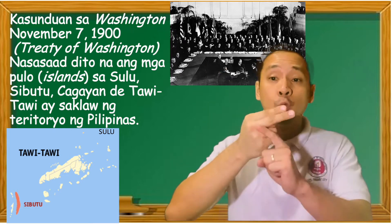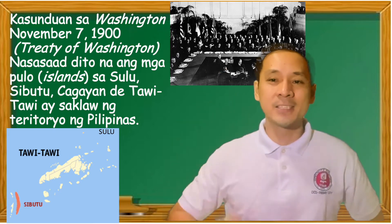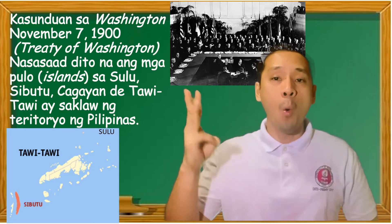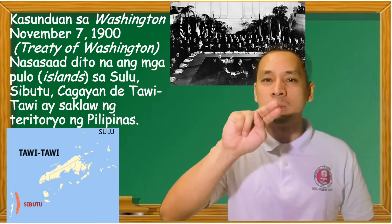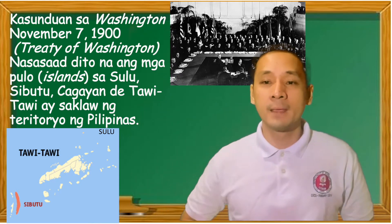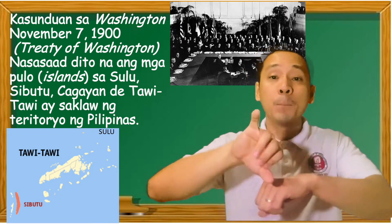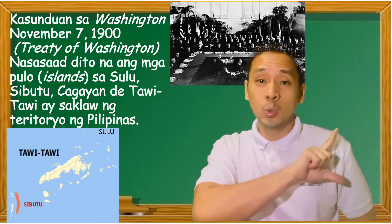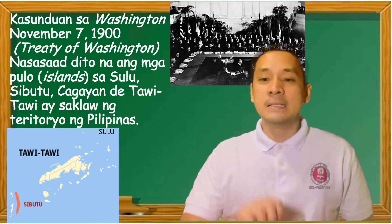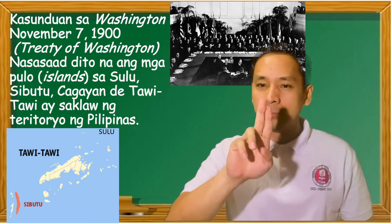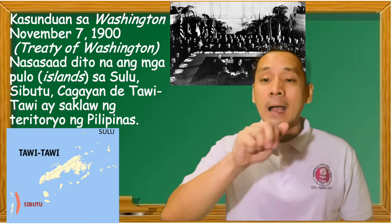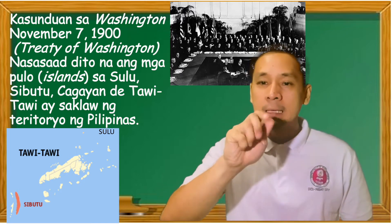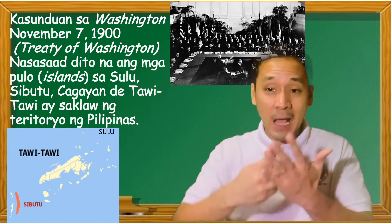Kasunduan sa Washington noong November 7, 1900s — Treaty of Washington. Nasasaad dito na ang mga pulo o islands ng Sulu, Sibuto, Cagayan de Tawi-Tawi ay saklaw ng teritoryo ng Pilipinas.